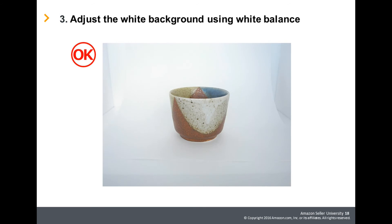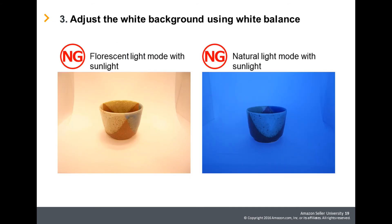First, try taking the photograph on the auto or default setting to confirm the quality. This is an example of a good photograph — it shows the product's true coloring. Depending on the camera mode or setting, the coloring can vary greatly, as in these bad examples. Actual photos should be taken and adjustments made for optimal mode or settings.